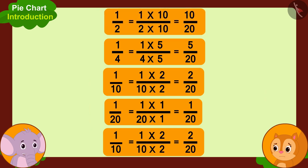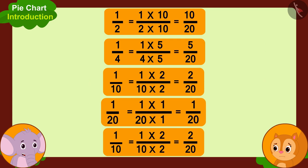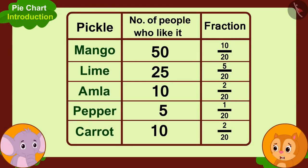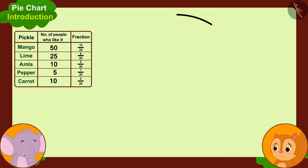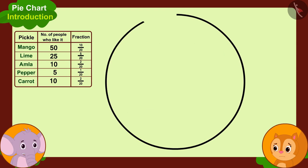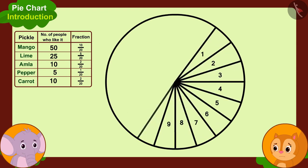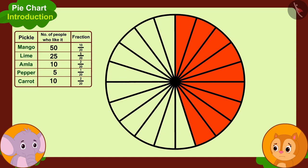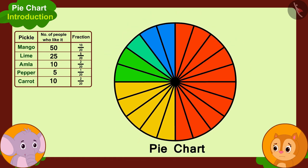They rewrite all the fractions so that the total parts of each fraction is 20. Now they are ready to make the pie of the pie chart. They draw a circle, divide it into 20 equal parts, and finally color the parts according to the fractions to illustrate the data. The pie chart is ready!